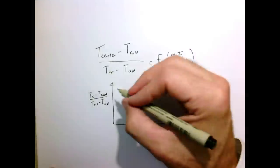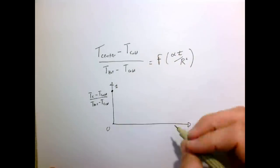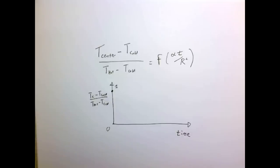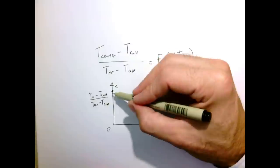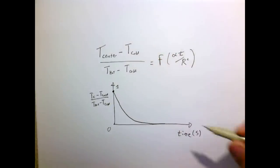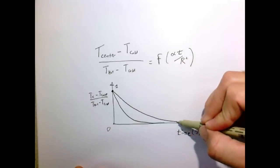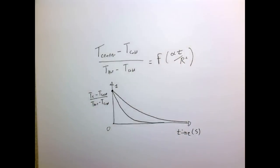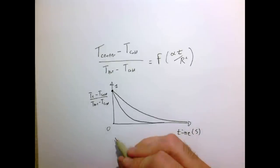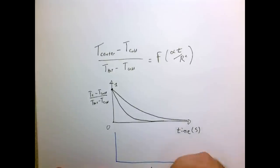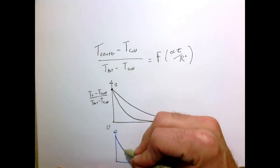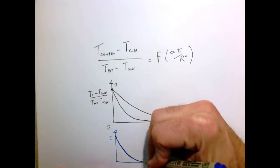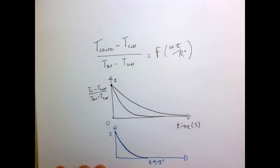Dimensional analysis tells us that the normalized center temperature is some function of one parameter: the thermal diffusivity times time divided by the square of the radius. So if we plotted our temperature function for many different experiments, they would all start at one and end at zero. If plotted versus time in seconds, different-sized objects would cool at different rates. But if we plot versus the dimensionless parameter alpha T over R squared, all experiments would collapse onto one master curve.